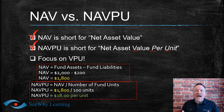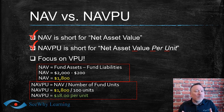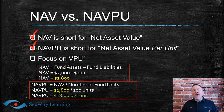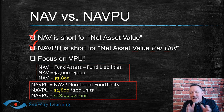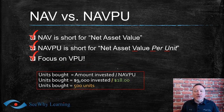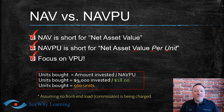When investors buy a fund, they're often buying at the latest NAVPU. To determine how many units a new investor receives, we take the amount of money being invested and divide it by the latest NAVPU. For example, if a new client invests $9,000 and the NAVPU is $18, we divide $9,000 by $18 and the investor receives 500 units of the fund.